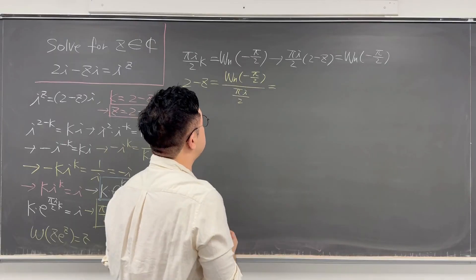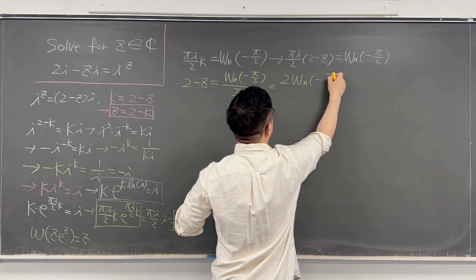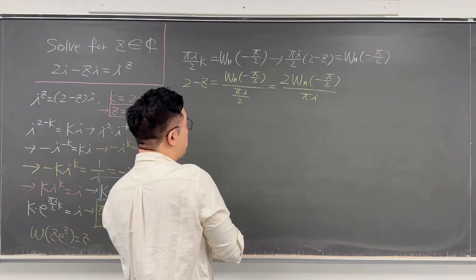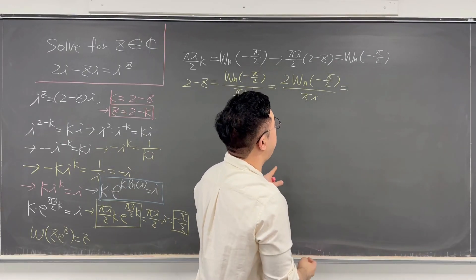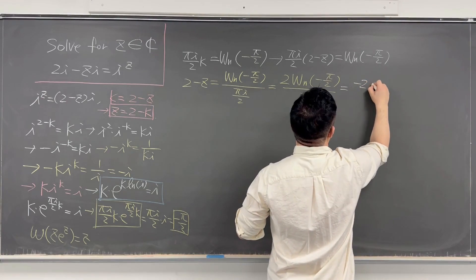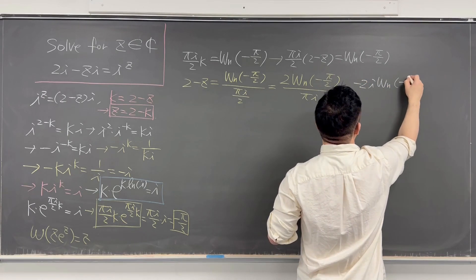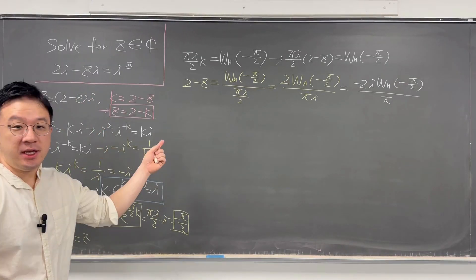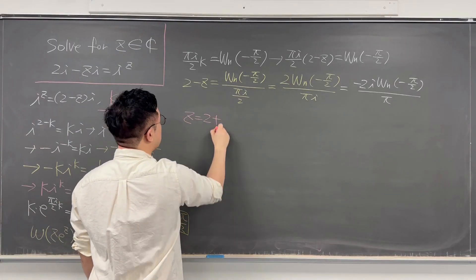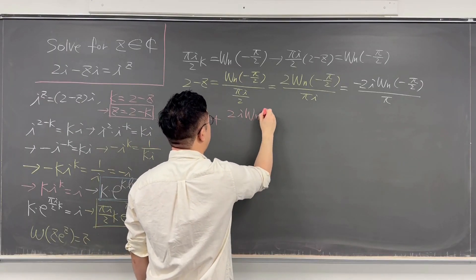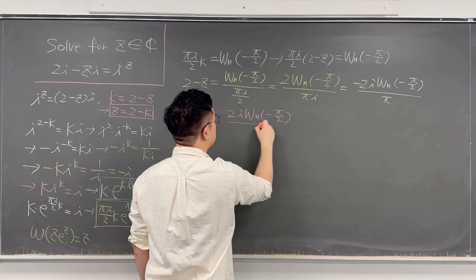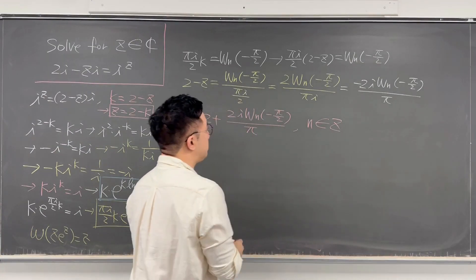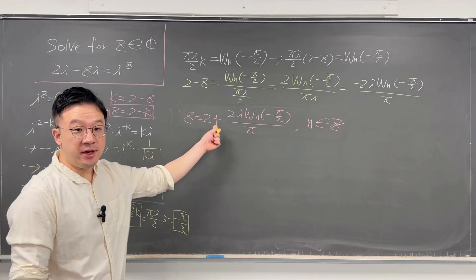So that's why this equals 2 times W_n of negative π/2 over πi. And if you multiply i to both numerator and denominator, this is the same as negative 2i times W_n of negative π/2 over π. Then your z equals 2 plus 2i times W_n of negative π/2 over π, where n has to be an integer. This is an expression for z including both real and complex solutions.